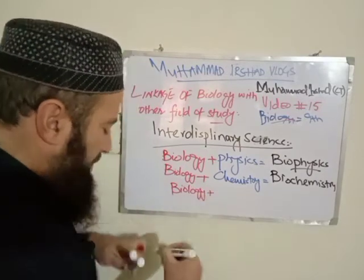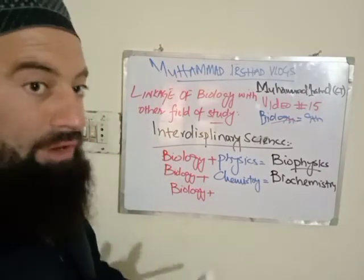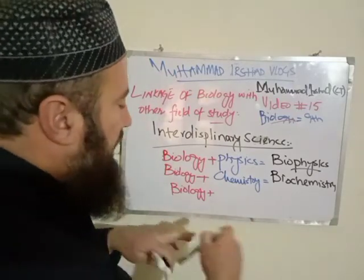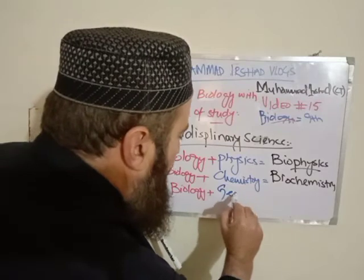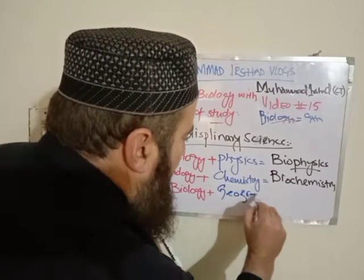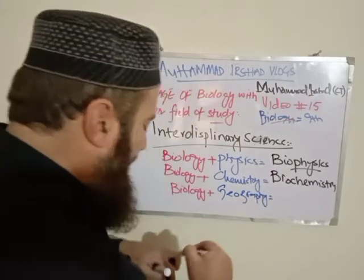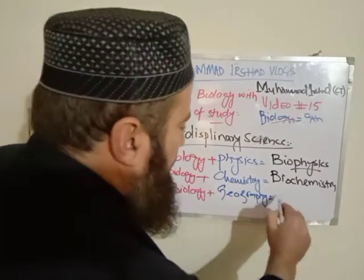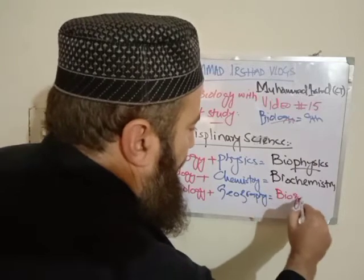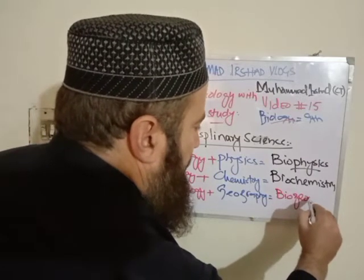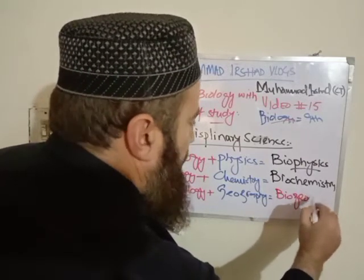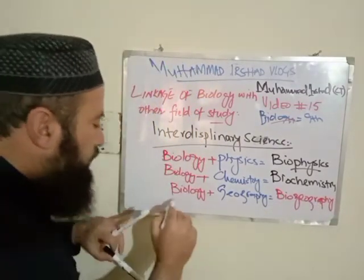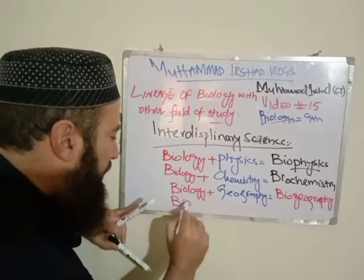When biology is combined with geography — geography being related to science — a new discipline is formed called bio-geography.